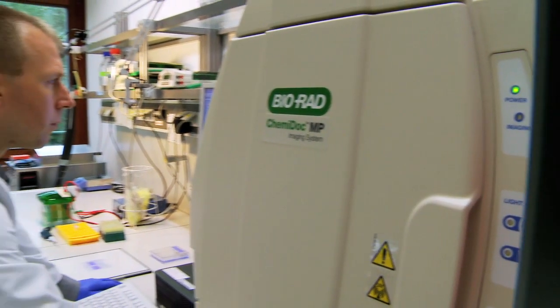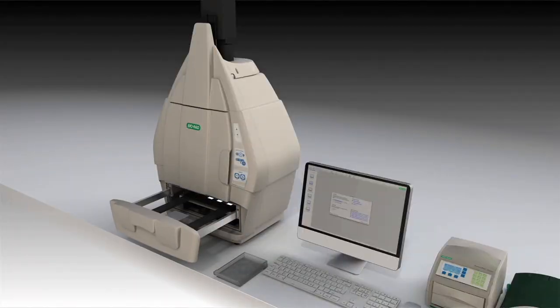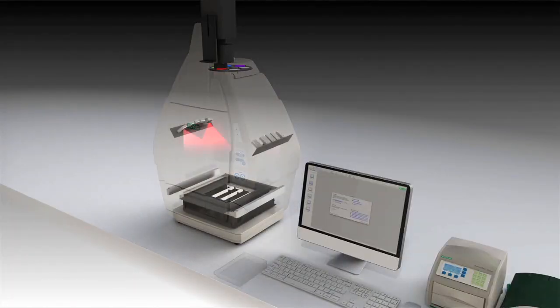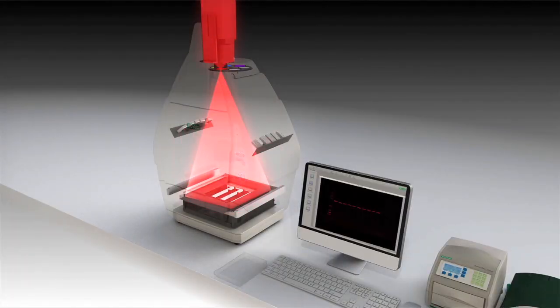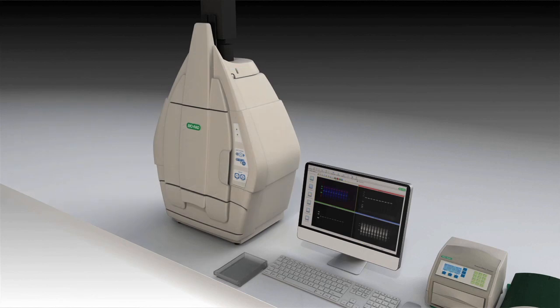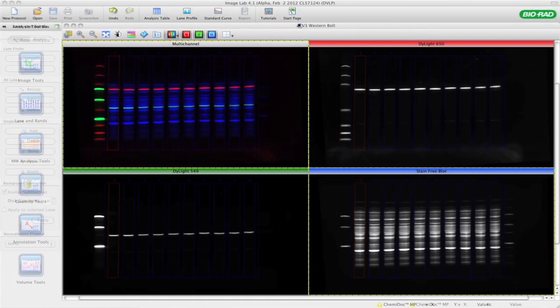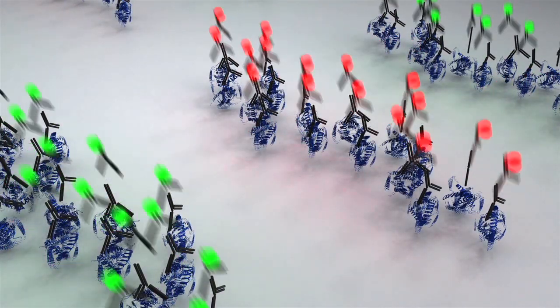I like about this new ChemiDoc MP system that we have these multiplex features with several colors, up to three colors. We can quantify quite easier because we can use several antibodies, up to three antibodies: one for the protein of interest and the other two for quantification proteins which are expressed in the whole retina.